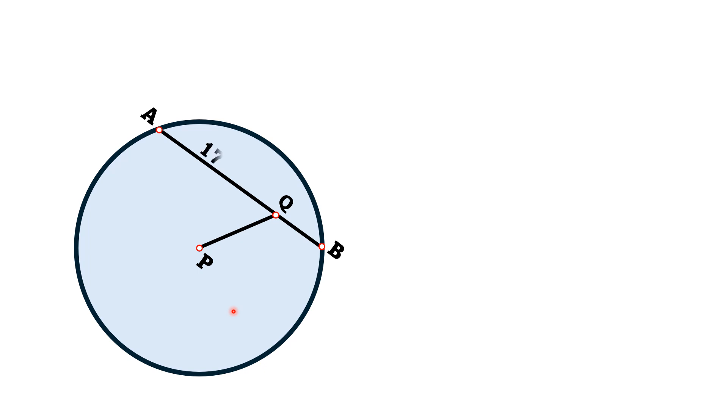If the length AQ is 17 units, QB is 7 units, and PQ is 8 units, then by this limited data we have to find the area of this whole circle.